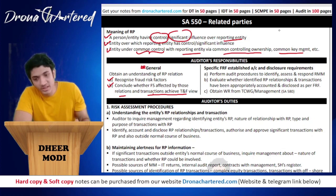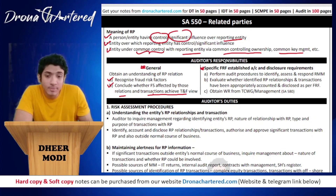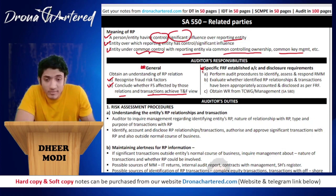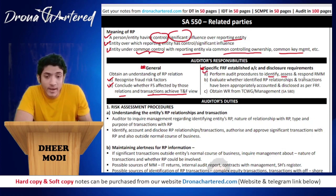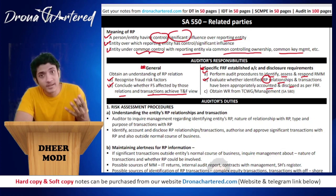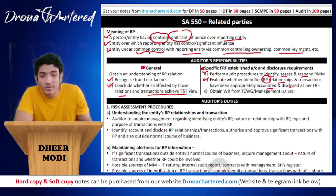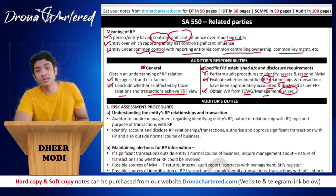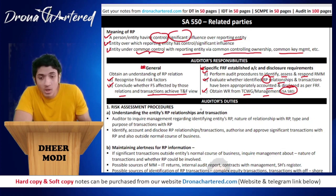For specific responsibilities under the financial reporting framework: first, perform audit procedures to identify, assess, and respond to the risk of material misstatement. Second, evaluate whether the identified related party relationships and transactions have been appropriately accounted for and disclosed — both the relationships and any transactions done within those relationships. Third, obtain written representation from TCWG or management, which is covered under SA 580.